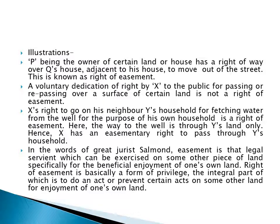Here are some illustrations on easements. P, being the owner of a certain land or house, has a right of way over Q's house. P is getting an easementary right over Q's house adjacent to his house to move out to the street. This is known as a right of easement. If P wants to enjoy his own land, he needs a right of way so that he can move out to the street — therefore he has this easementary right over Q's house.